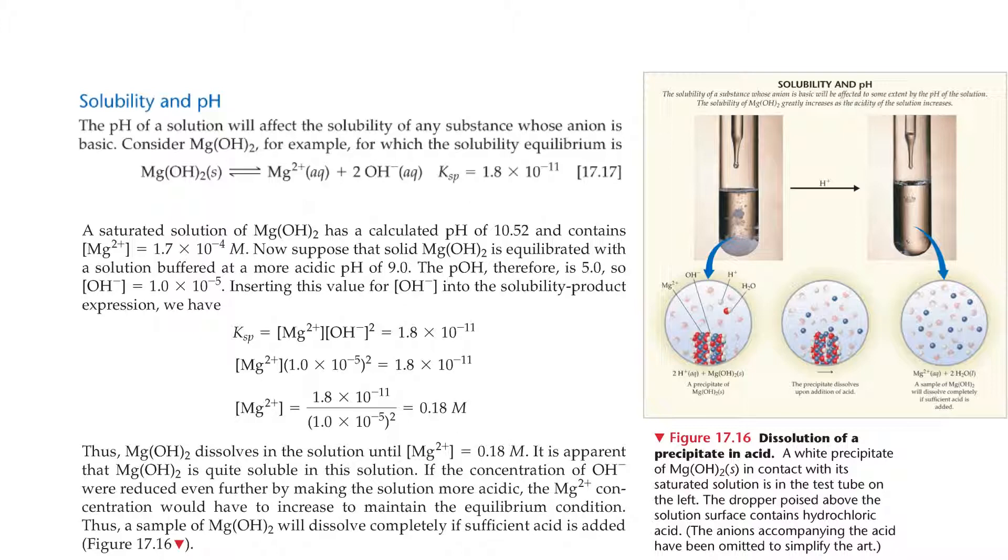Figure 17.16: Dissolution of a precipitate in acid. A white precipitate of magnesium hydroxide in contact with its saturated solution is in the test tube on the left. The dropper poised above the solution surface contains hydrochloric acid. The anions accompanying the acid have been omitted to simplify the art.